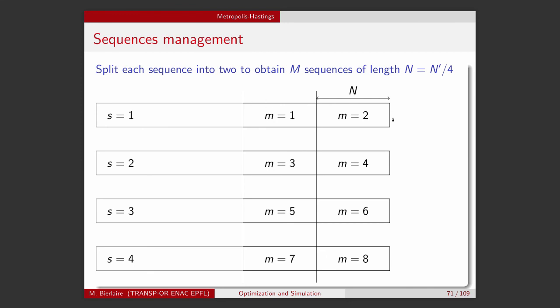Each sequence that is left, we split it in two parts. Okay, so therefore, we will have 2S sequences. So here, S equals 4. So we have 8 sequences. 1, 2, 3, 4, 5, 6, 7, 8.